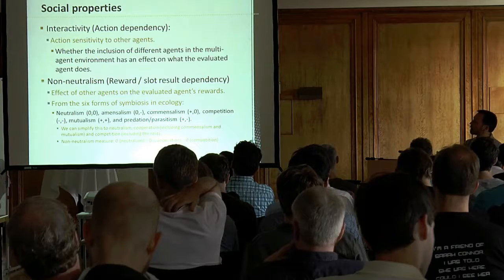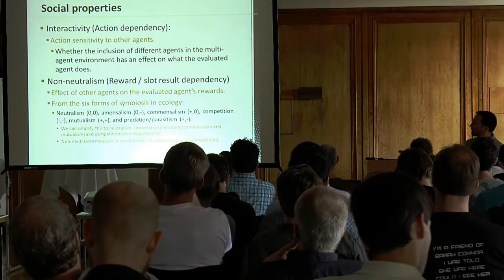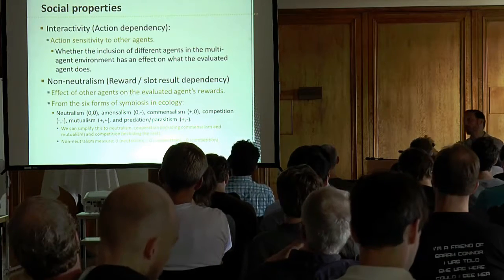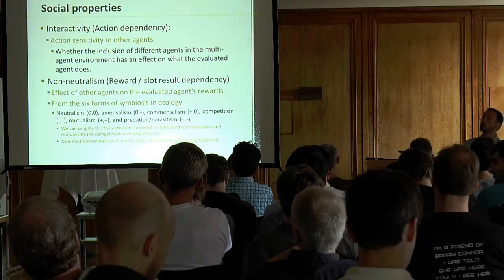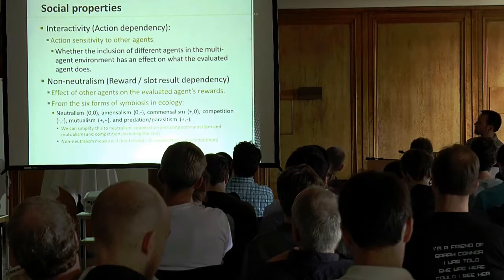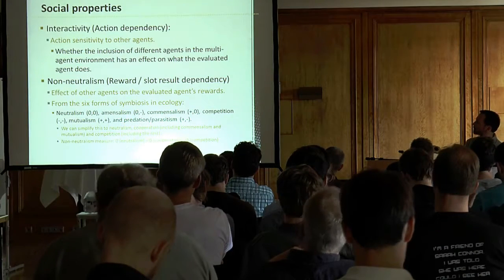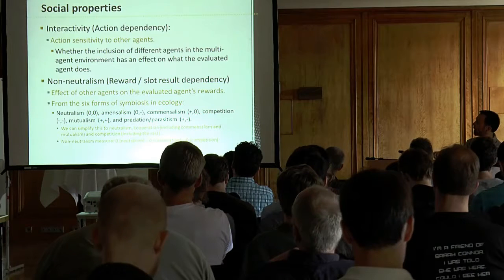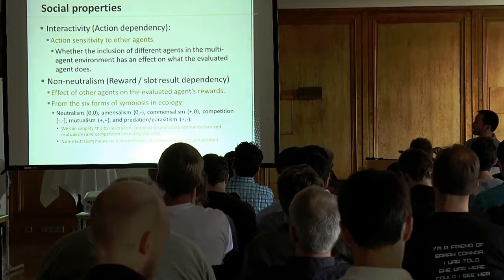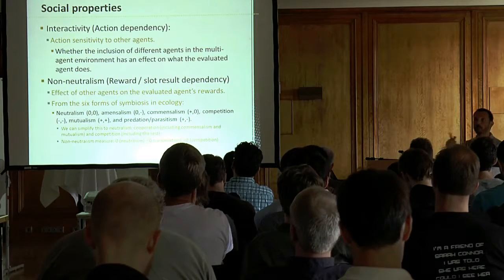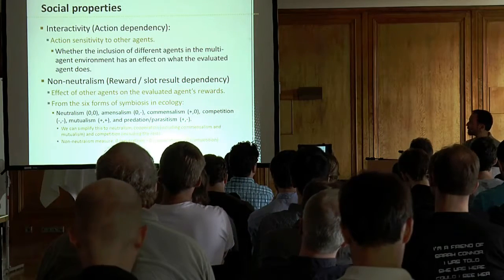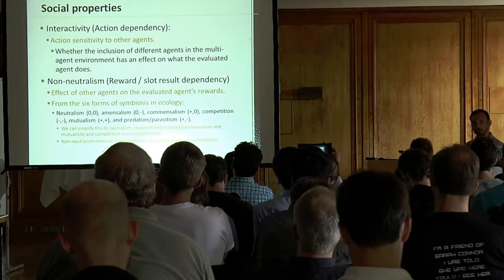Non-neutralism is a simplification of the six forms of symbiosis in ecology — neutralism, whether you benefit from or compete with the other, whether the rewards of the other affect you or not. You can have positive-positive (cooperation) or negative-negative (competition). We simplified this into three cases: neutralism (no interaction between rewards), cooperation, and competition.